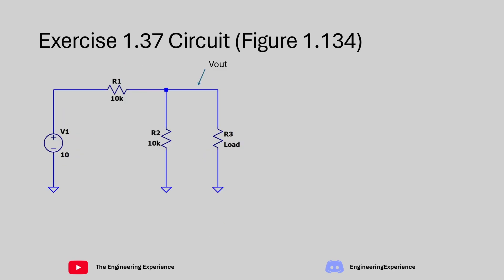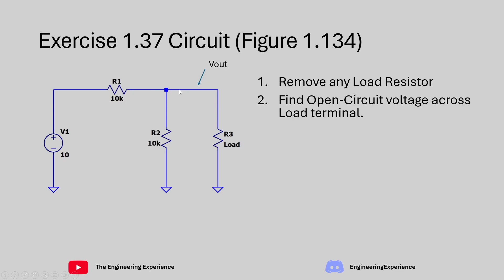For the second part of the question, we need to compare the Thevenin equivalent circuit for exercise 1.37 with the Thevenin equivalent circuit for exercise 1.38. Going through similar steps for exercise 1.37: we had a 10 volt source with two series 10k resistors, and the final 10k resistor was in parallel with the load connection. So Vout is on this node over here. Similar to before, remove any load resistors, and find the open circuit voltage on the output node. In this case, we have a potential divider with two resistors, and the middle of the potential divider is our open circuit voltage.